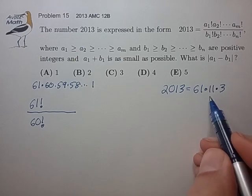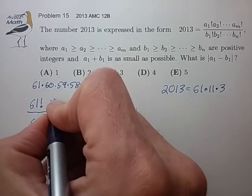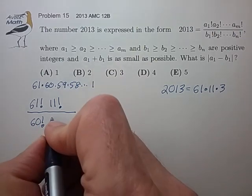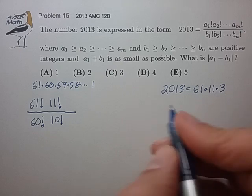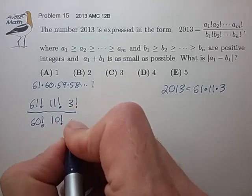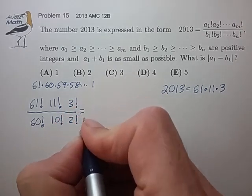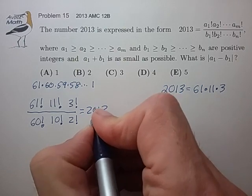And probably the simplest way to get rid of those is to just put a 60 factorial in the denominator. And we can do the same with the factor of 11. Put 11 factorial up top, 10 factorial on the bottom to get rid of the unnecessary factors. Do the same with 3.